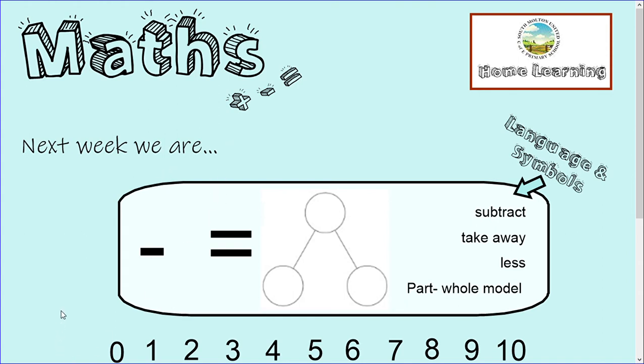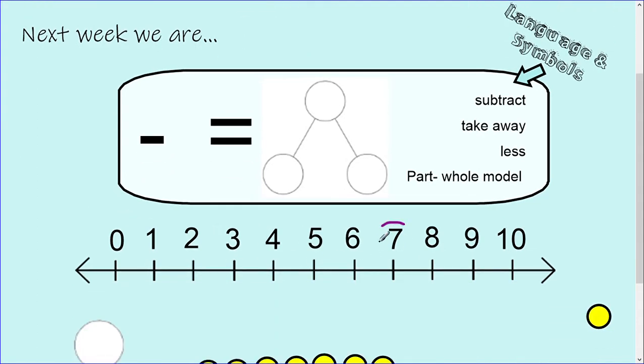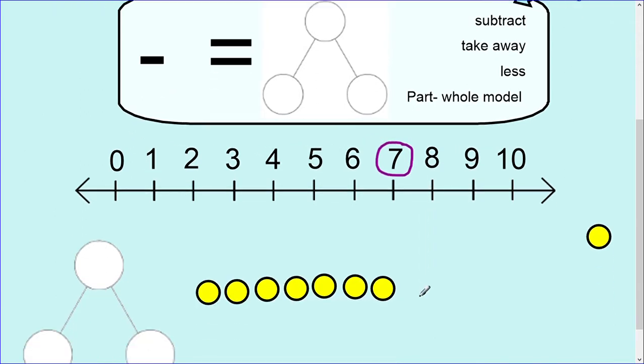Hello everybody, next week we are learning about subtraction and how to take away by crossing out. What you can do at home is find a number from 1 to 10. Today we're going to use the number seven, but you can choose any number, probably three or more though.